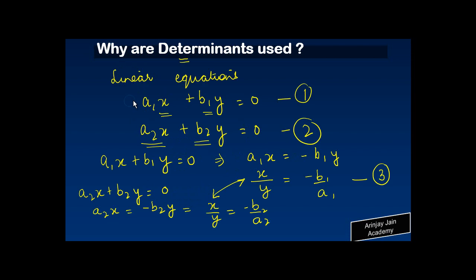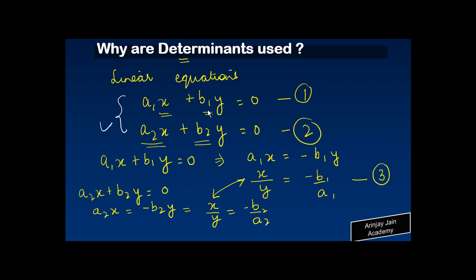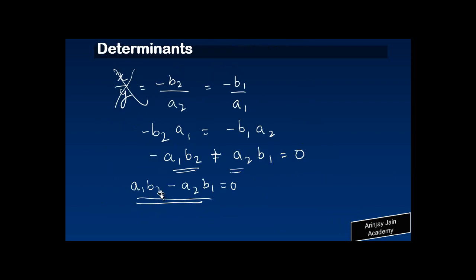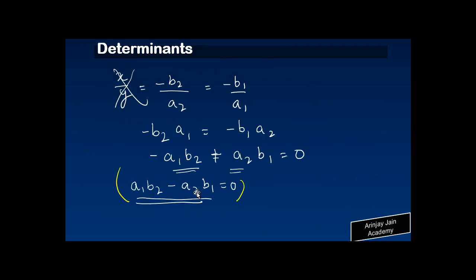Starting from those two linear equations, what we have reached is the expression A1·B2 − A2·B1, which is exactly what I showed you earlier as the expansion of a determinant. So you can solve linear equations by using determinants. Our next video is going to be on how to solve a determinant of order three.